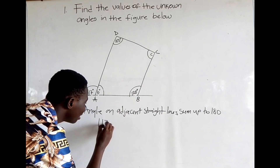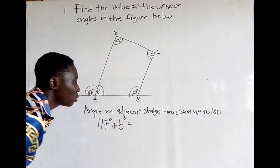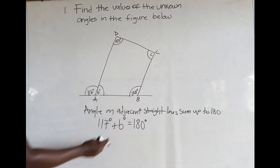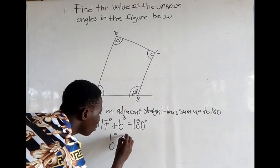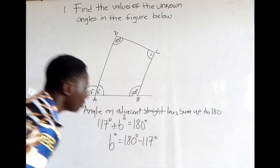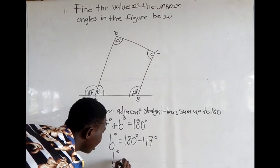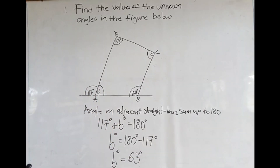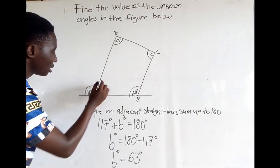117 degrees plus b degrees is equal to 180 degrees. Making b the subject, we get b is equal to 180 minus 117 degrees. Subtracting 117 from 180, b is equal to 63 degrees. So we now know b to be 63 degrees.